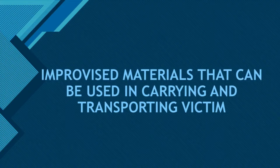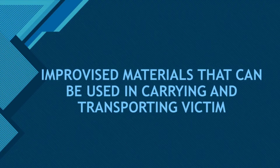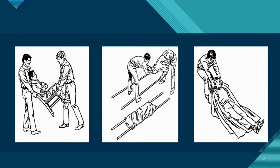Now, what are the things you can use in carrying and transporting a victim? We will discuss improvised materials for this purpose. The first is a chair — you seat the victim on a chair and then lift it. The second is using a stretcher. And another option is simply using a cloth. Those are the different materials you can improvise and use to transport or carry a victim.